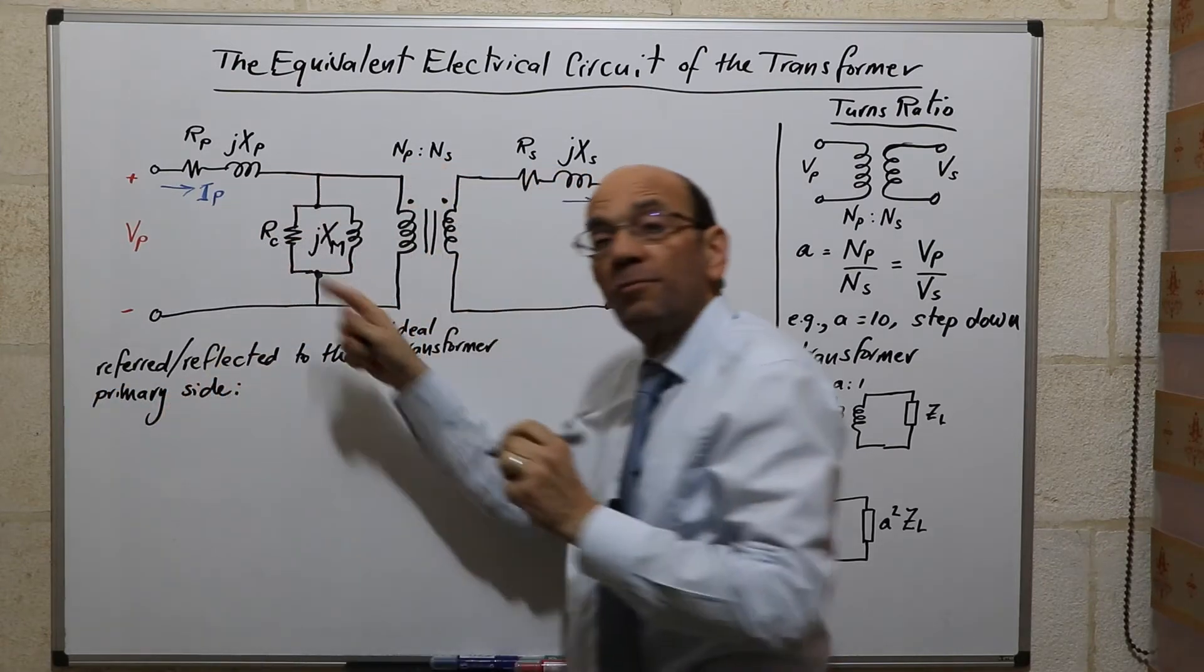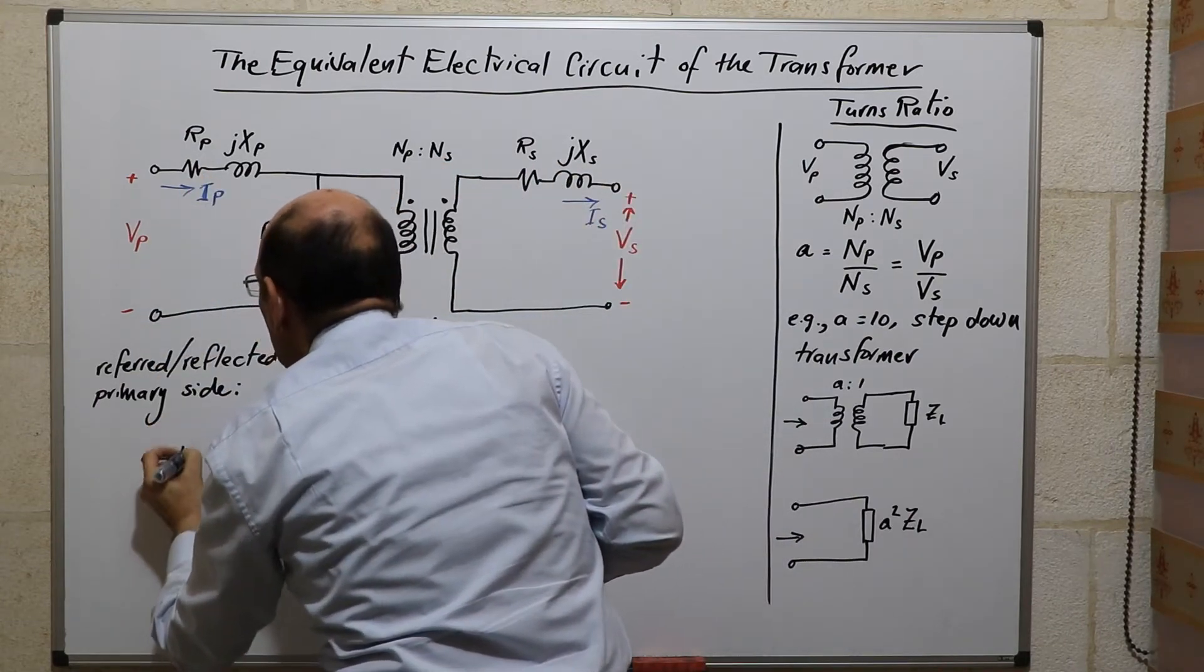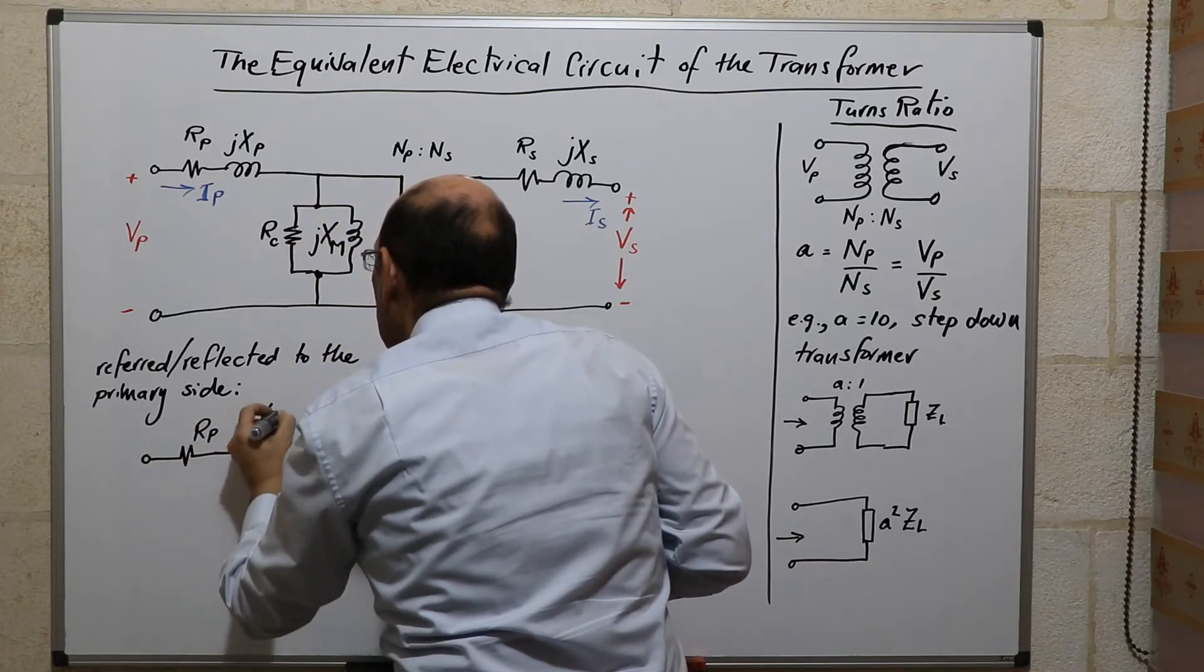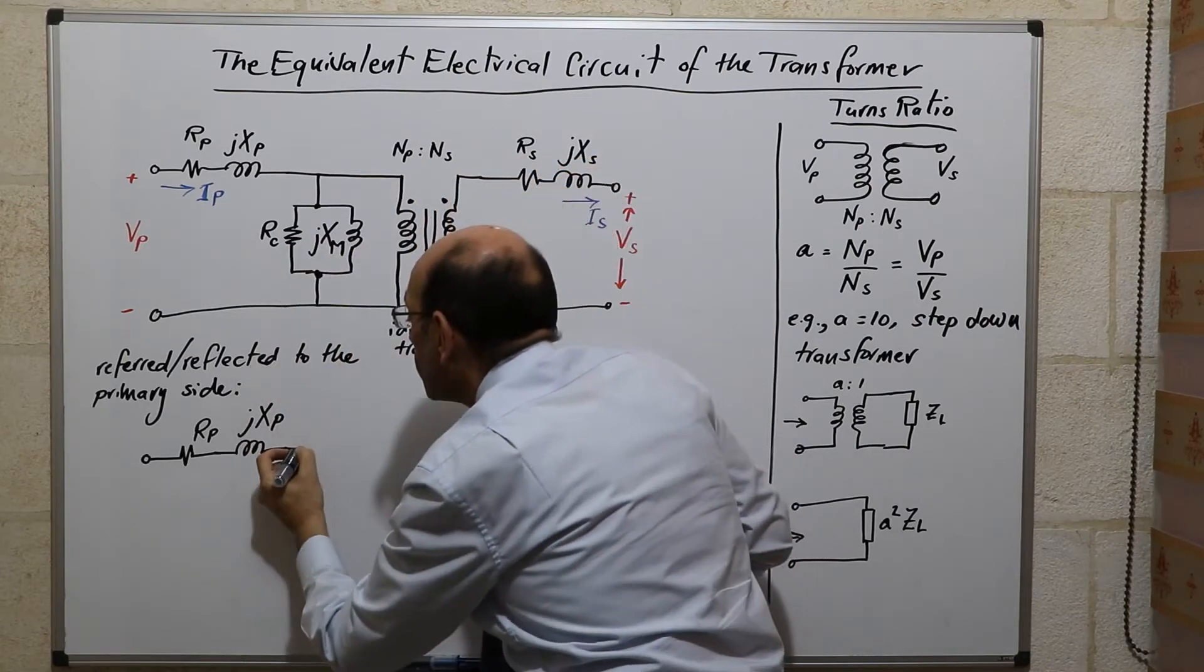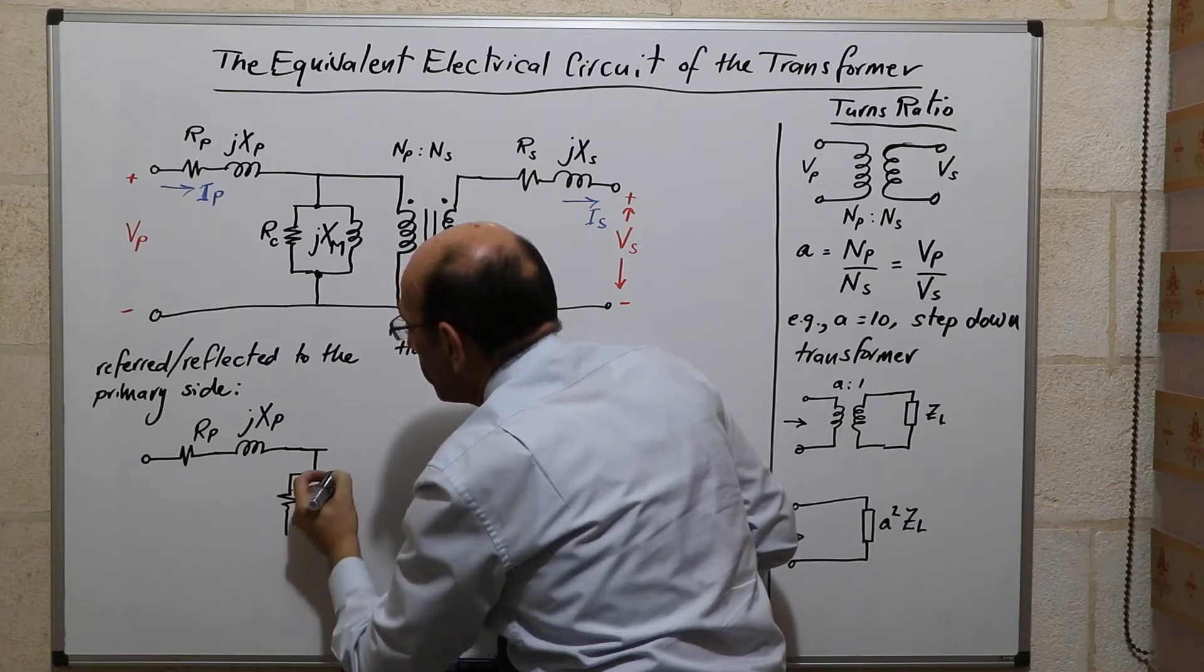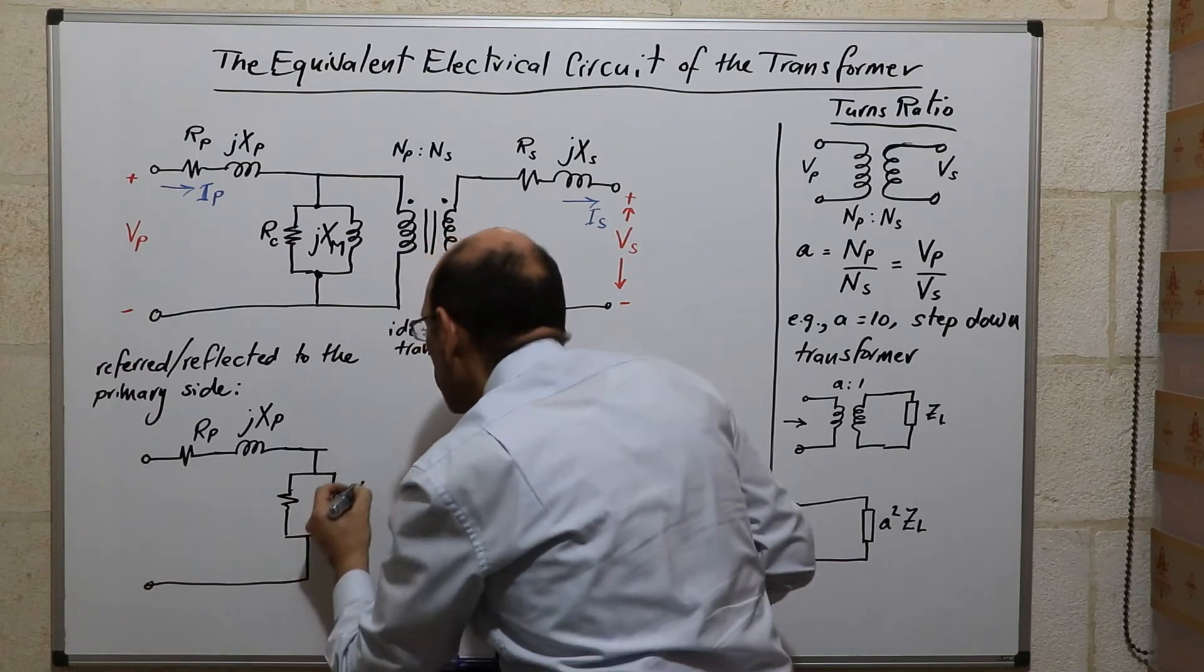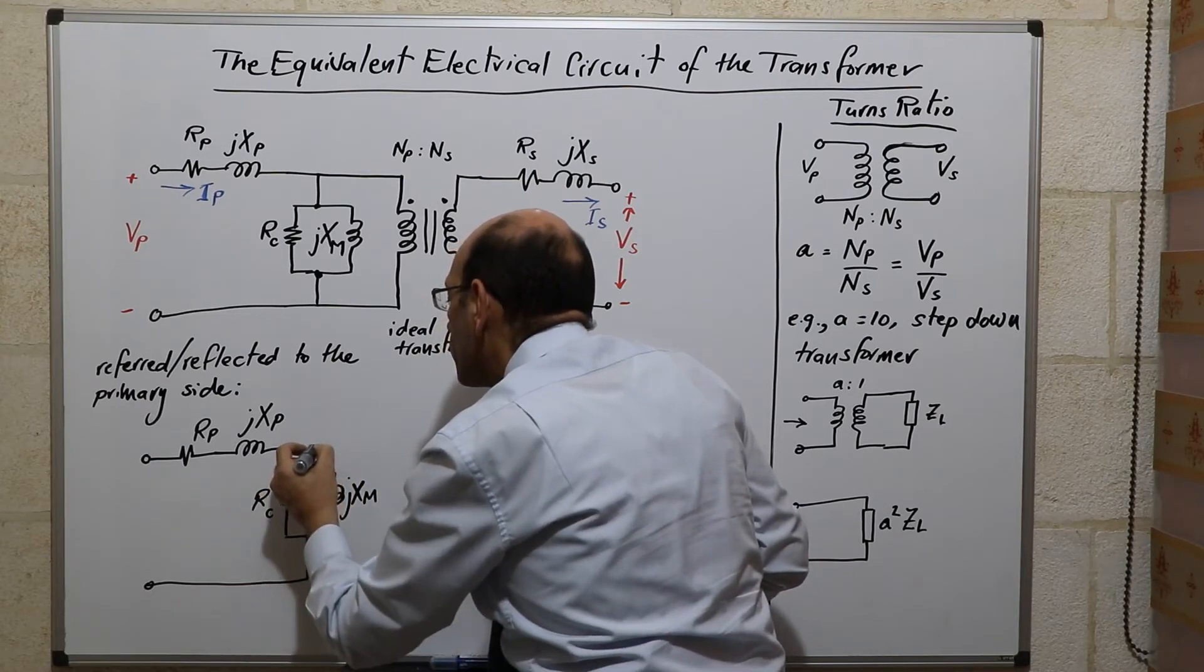This is what this model will look like. We will still have that part which is R subscript P and X subscript P to represent the leakage and the resistance of the wire. We will still have the shunt components, which is the magnetization inductance X subscript M and R subscript C.